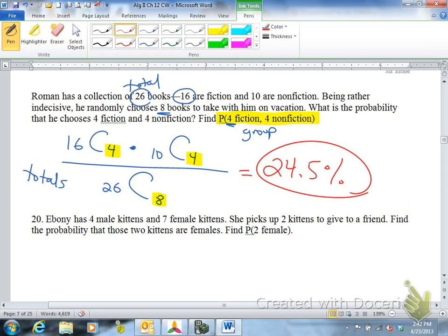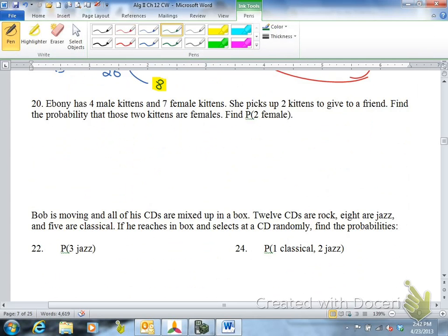The next question. Ebony has four male kittens and seven female kittens. She picks up two kittens to give to a friend. Find the probability that those two kittens are females. Notice she's taking a group. She's not picking one kitten at a time. She's picking two kittens at once. There are seven female, she's choosing two of them. The order of these two kittens doesn't really matter. So it's a combination. Divided by your total, your total would be 11 kittens, and you're choosing two. So 38.2%.